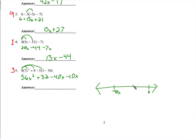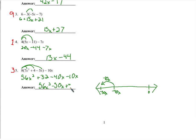I saw a lot of negative 30x's, but let's think about this carefully. We can visualize it by thinking of negative 40x's being to the left. And then if we're going to subtract 10x, we move further to the left, which puts us at negative 50x. So we have 56x squared minus 50x plus 32.